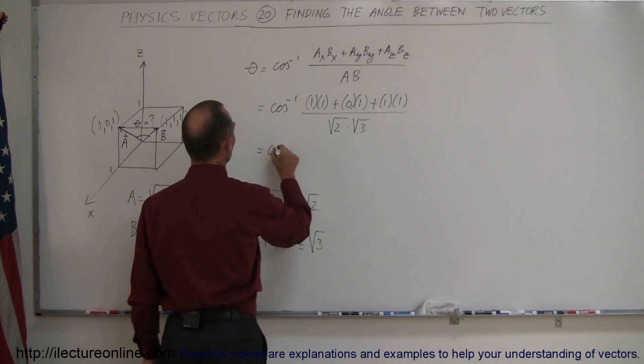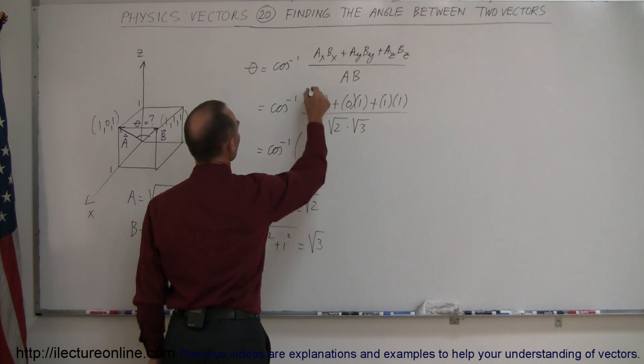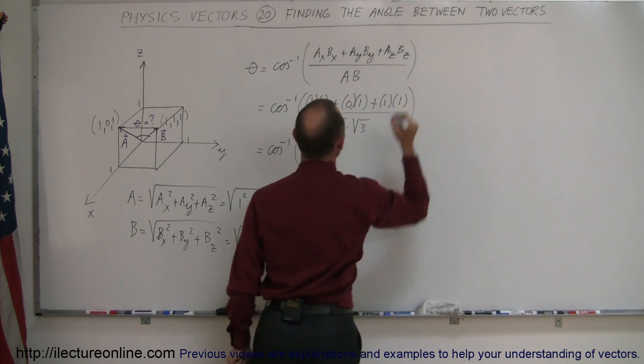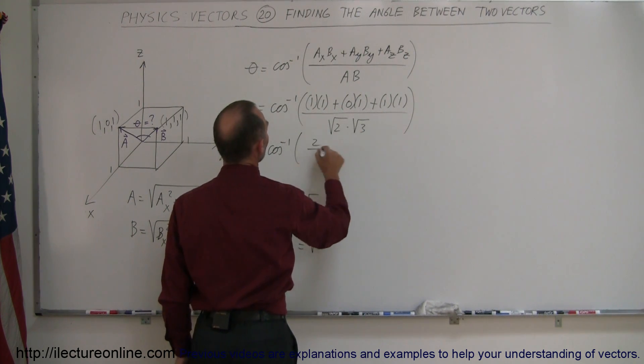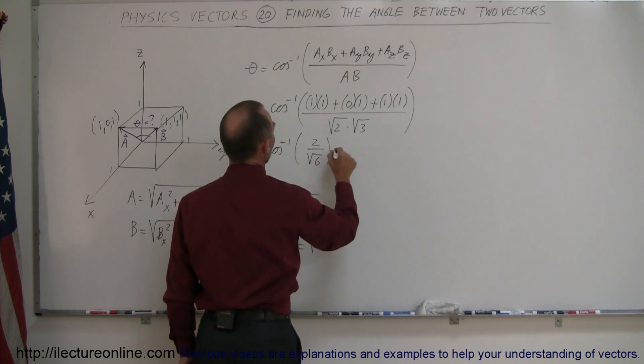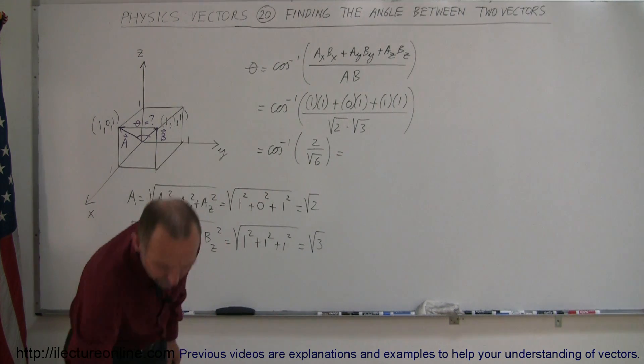This is equal to the arc cosine of, maybe I should put parentheses around that whole thing. So we have 1 plus 0 plus 1, that would be 2 divided by the square root of 6. Let's find out what that is equal to.